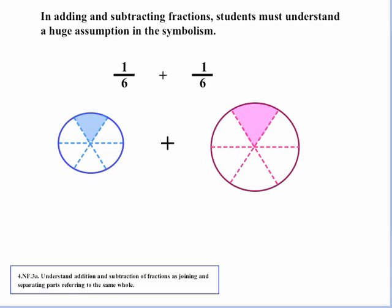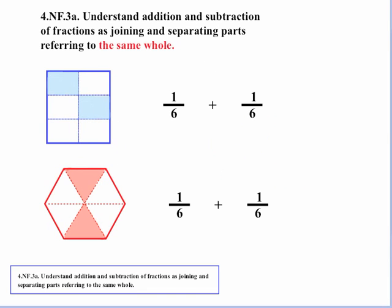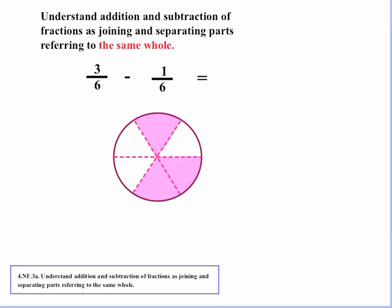Even when they're the same objects like two circles, if the slices are not the same size, I cannot add this 6 with this 6. So we focus on Part 3A: understand addition and subtraction of fractions as joining and separating parts referring to the same whole. Here we can combine this 1/6 and this 1/6 because they are parts of the same whole. And this applies to subtraction also — so if we have 3/6 and subtract 1/6, that leaves us with 2/6.